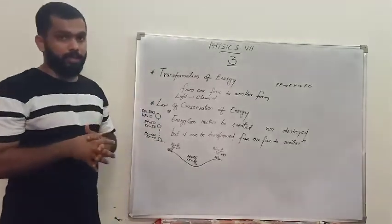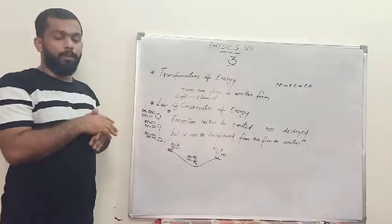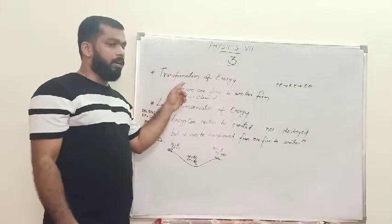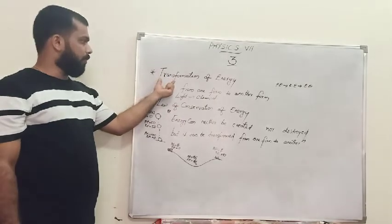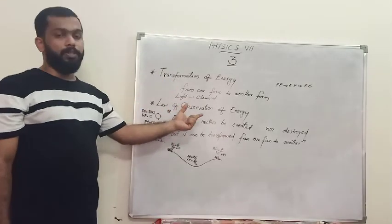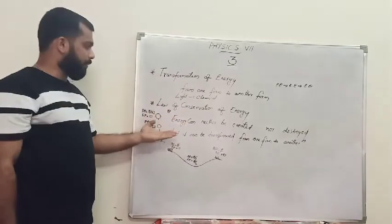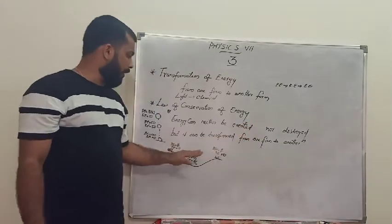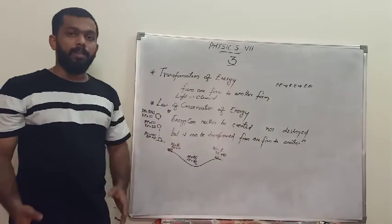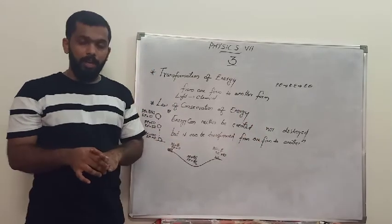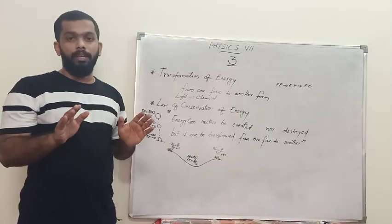So this is our chapter. We discussed what energy is, its SI unit, kinetic and potential energy, transformation of energy, and the law of conservation of energy. Transformation of energy means changing from one form to another. The law of conservation says energy can neither be created nor destroyed but can be transformed. Please go through the material two or three times to make everything clear. Thank you.